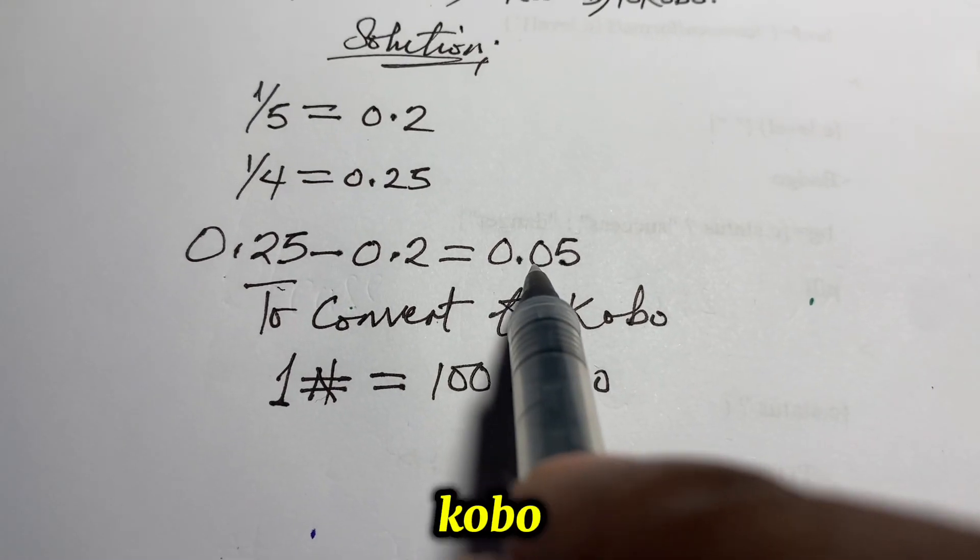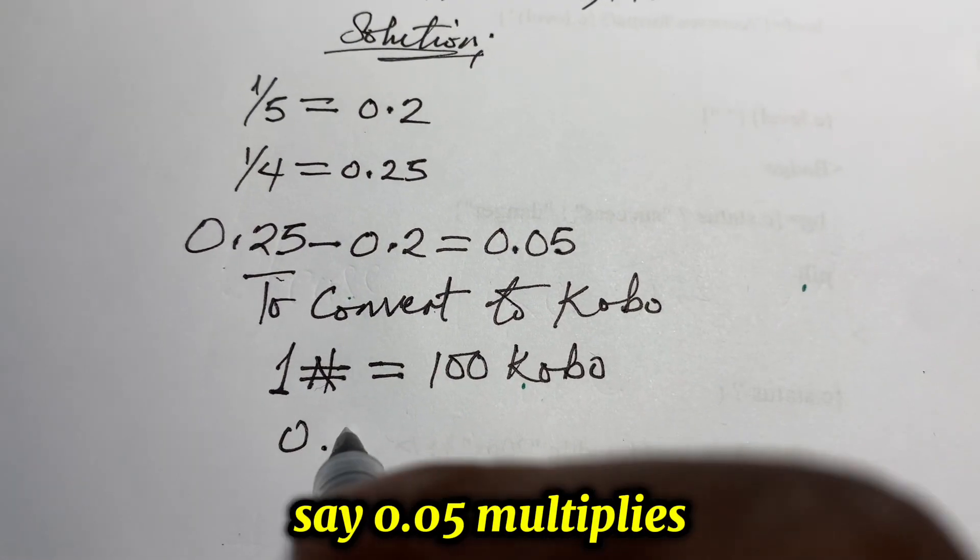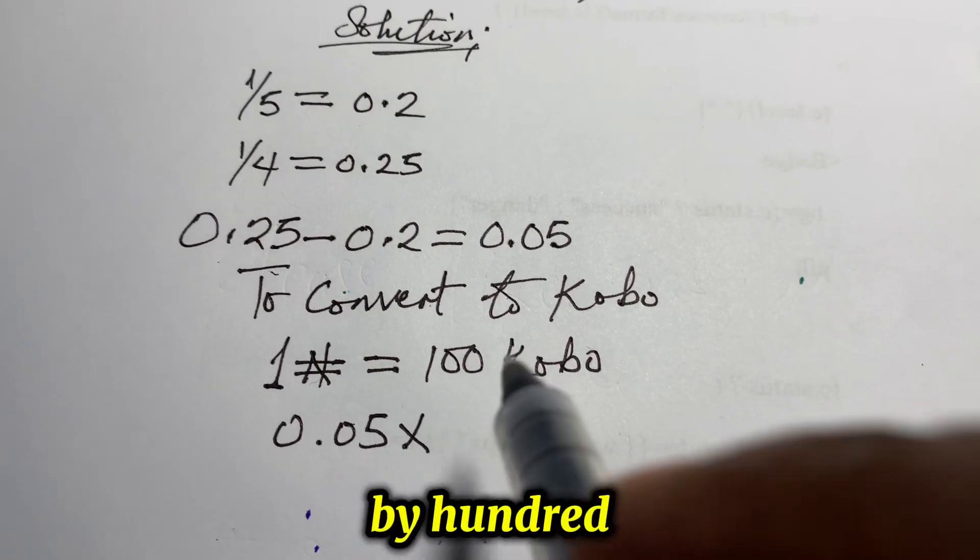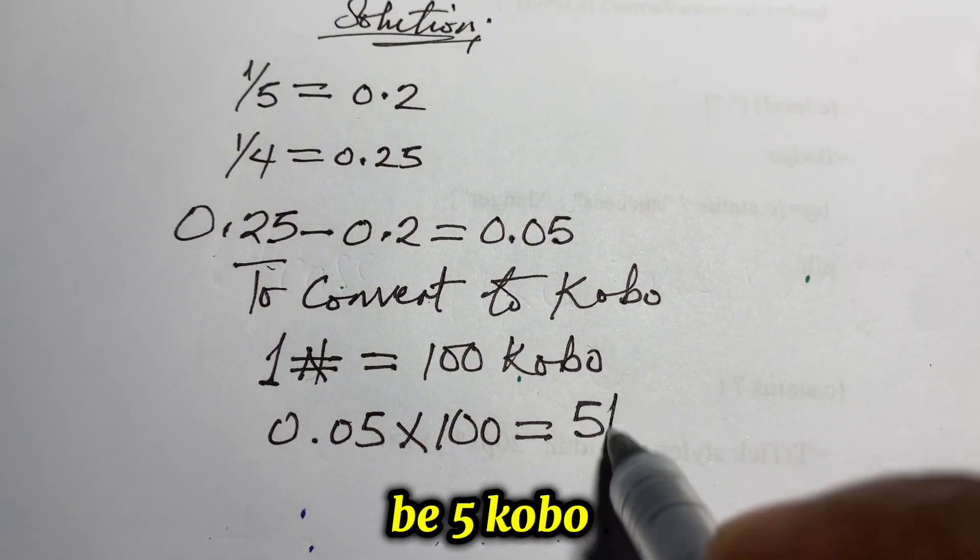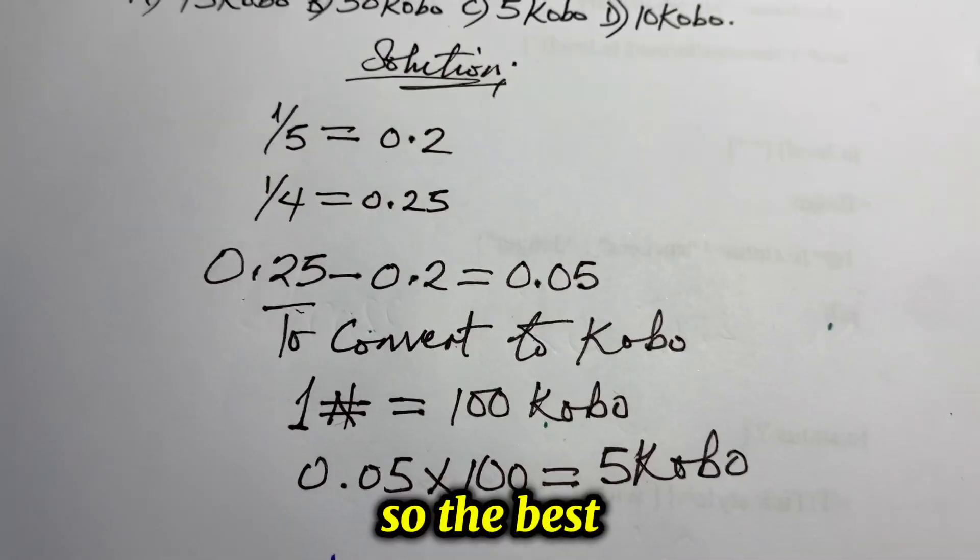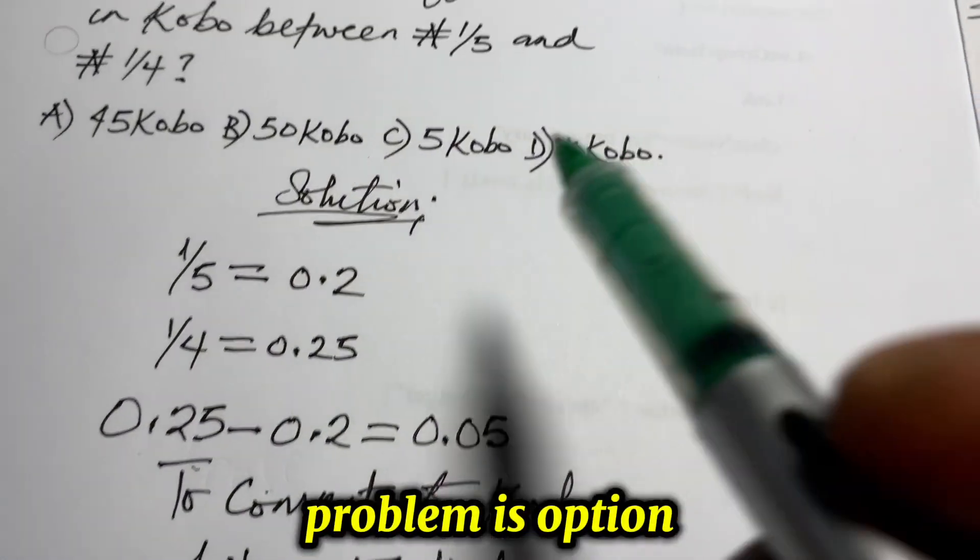0.05 multiplies by 100. So, we have the result to be 5 kobo. So, the best option for this problem is option C.